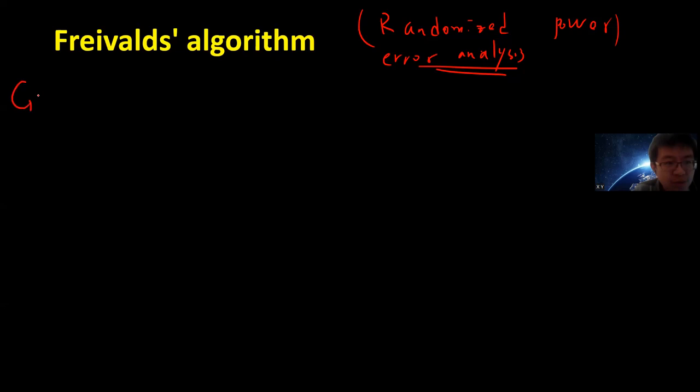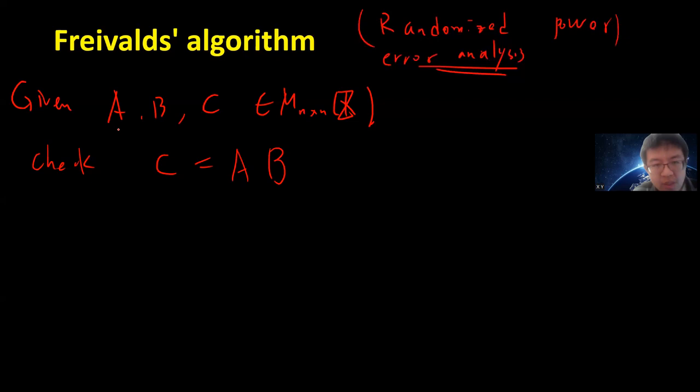So the problem is the following: given A, B, and C are all n-by-n matrices with integer coefficients. The question is to check if C equals A times B.